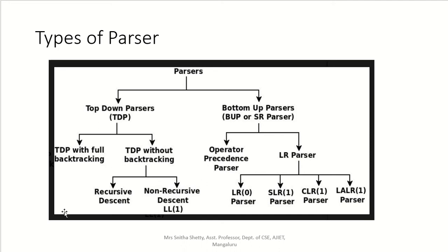Predictive parser is classified into two types: predictive recursive descent parser and predictive non-recursive descent parser. We have already started with the non-recursive descent parser, which is a predictive parser. One more name for predictive non-recursive descent parser is table-driven parser, because we construct a parsing table and it is based on that table.